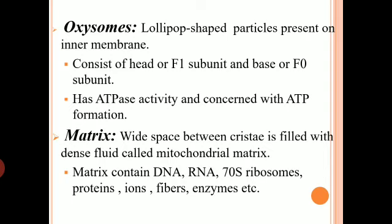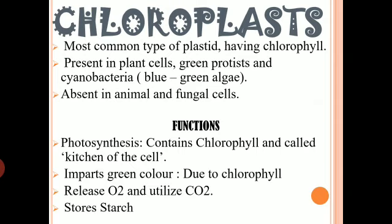That's all about the structure of mitochondria. Its function — it is the powerhouse of the cell, storing energy as ATP, the energy currency of the cell. Now let's talk about the next organelle, which is called chloroplast. Like mitochondria, chloroplast is also a semi-autonomous organelle, meaning it also consists of its own DNA and ribosomes by which it can synthesize its proteins and replicate whenever required.